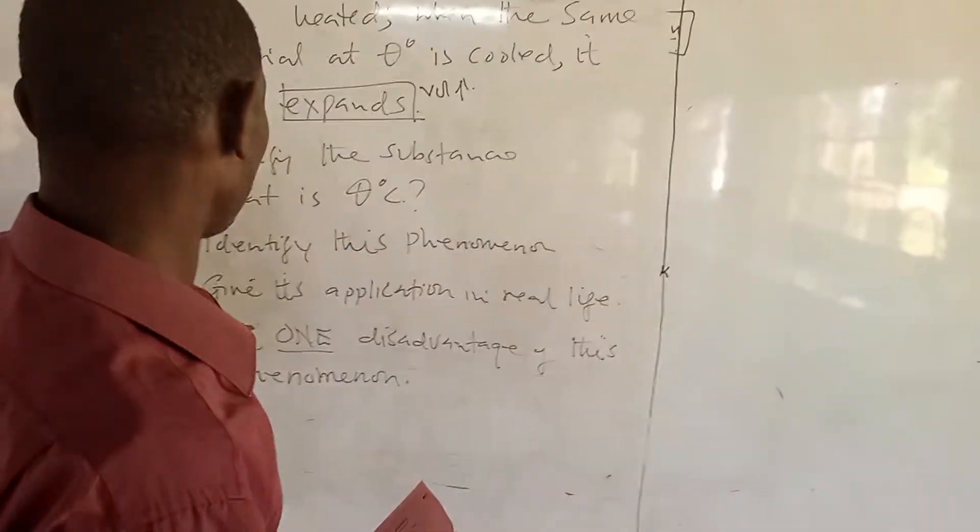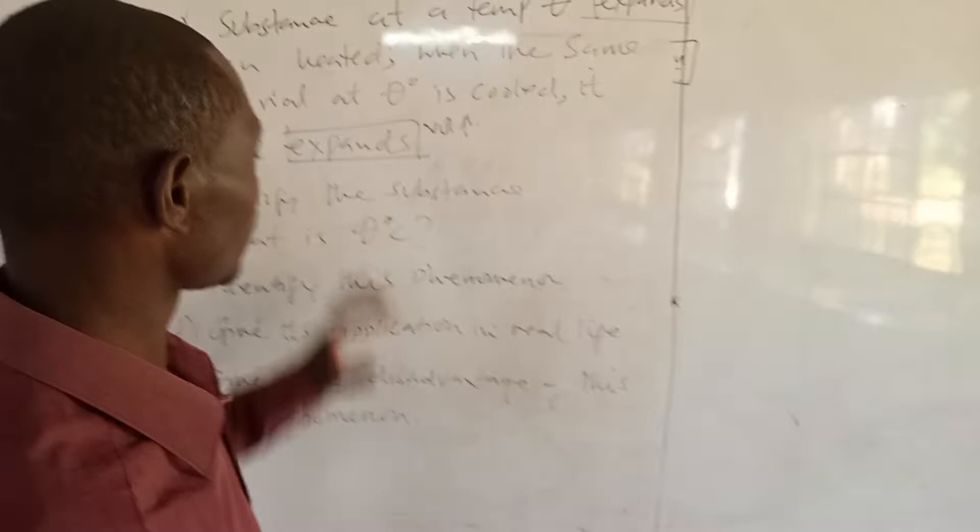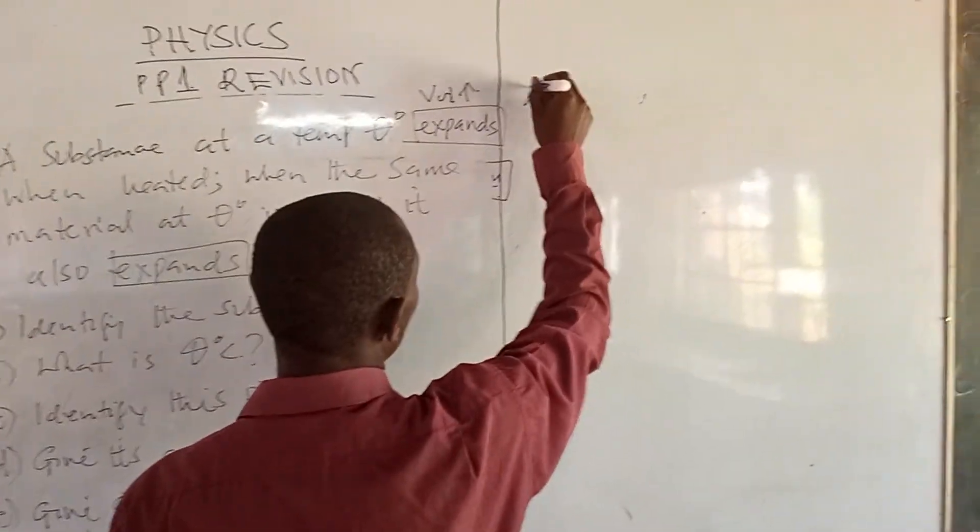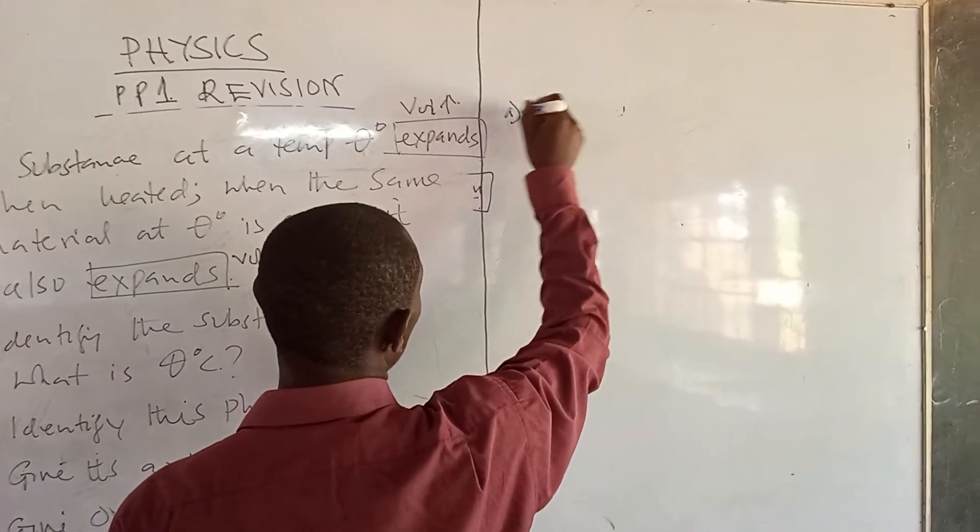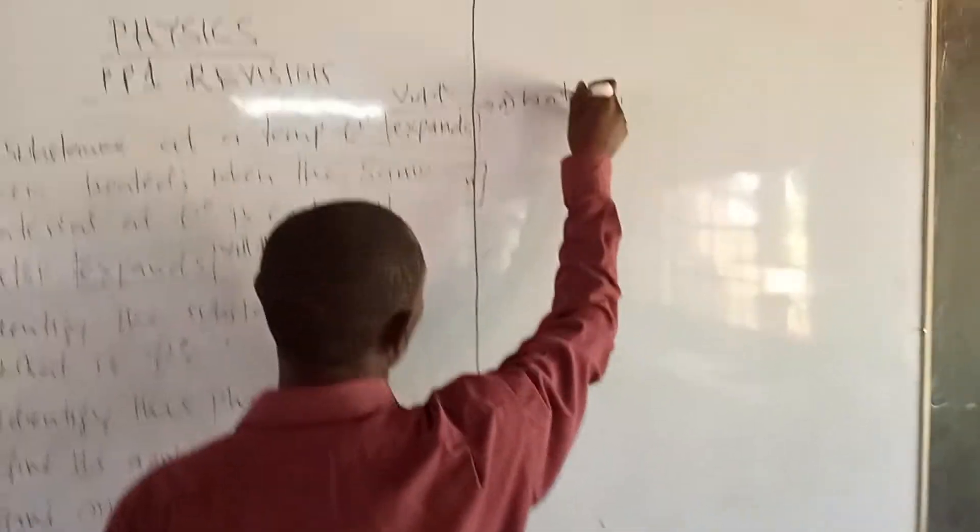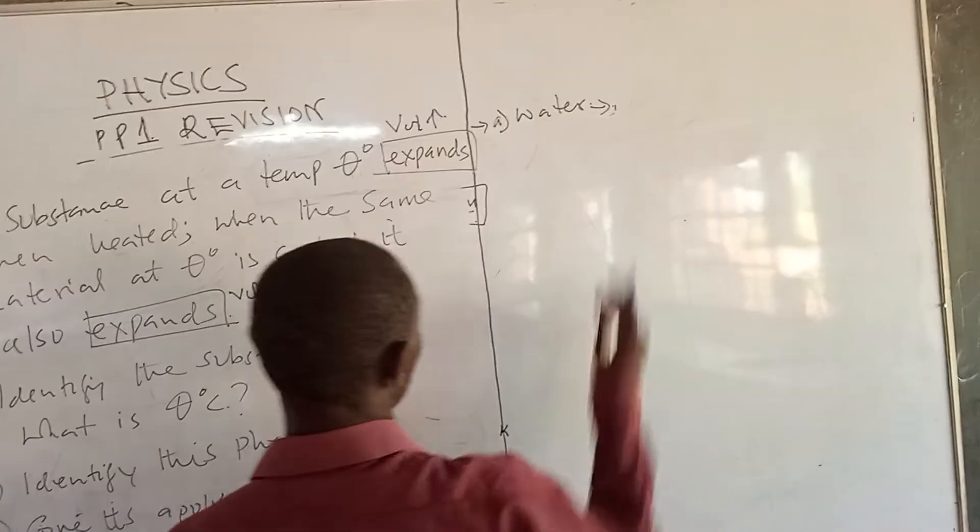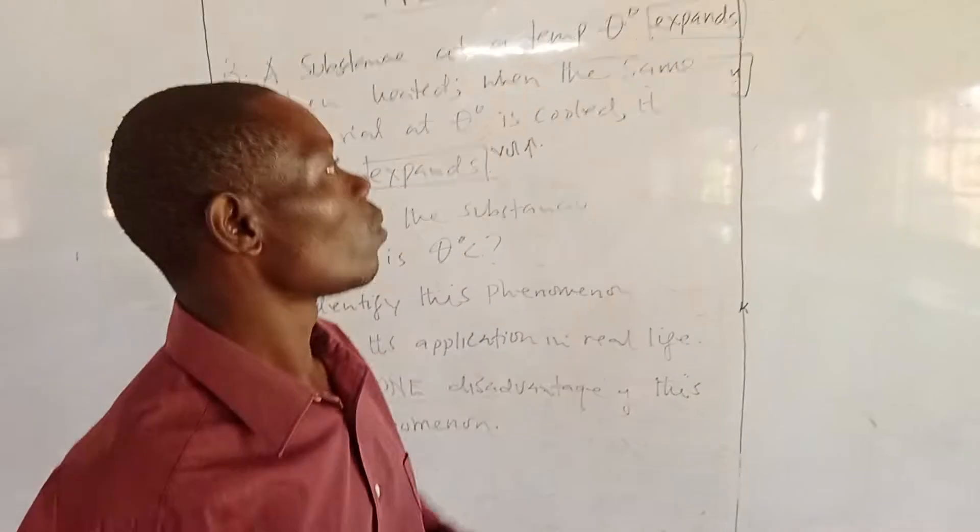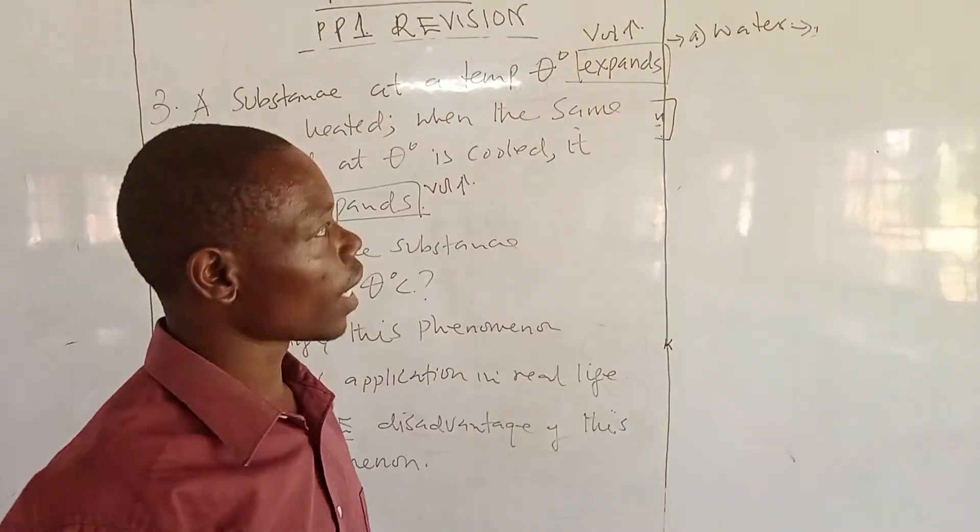Now, if you are asked to identify this substance, this substance is water. The reason why we say water is because water has got a property called anomalous expansion.